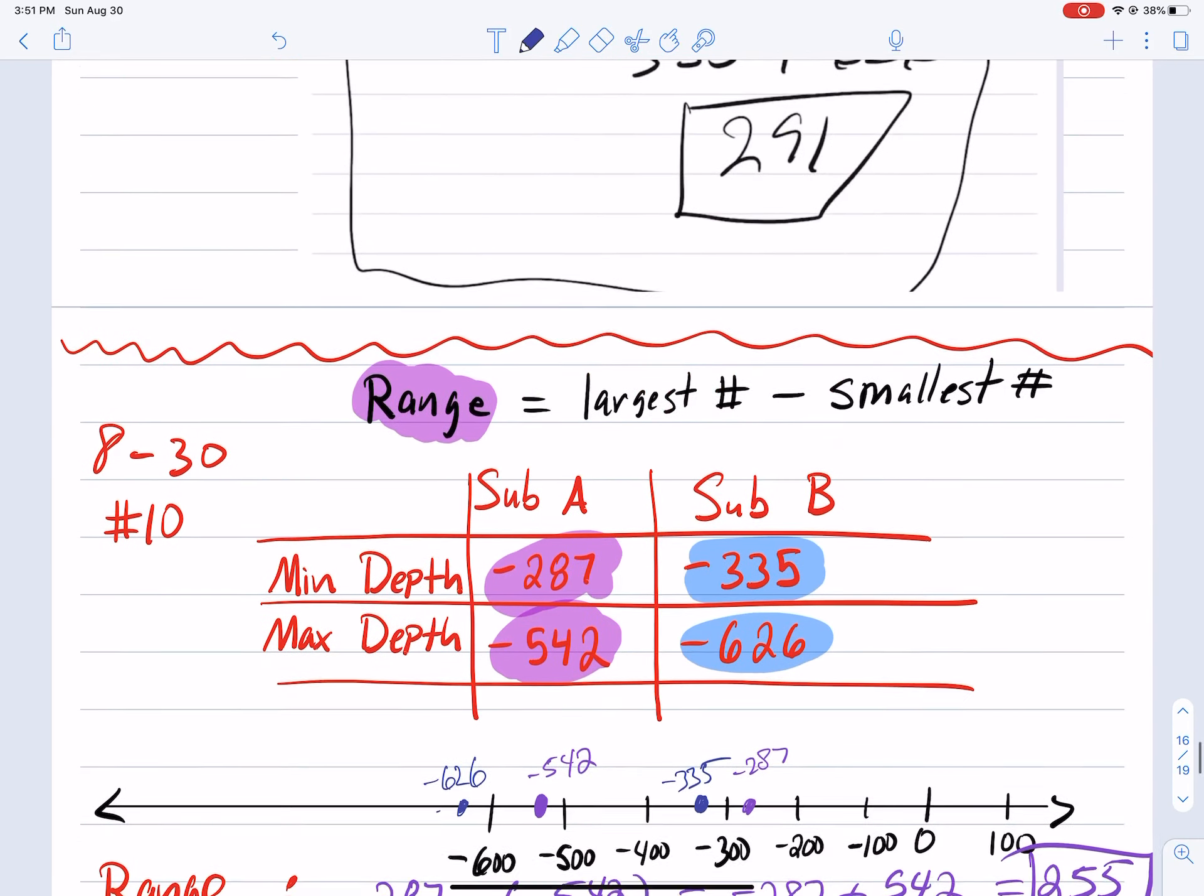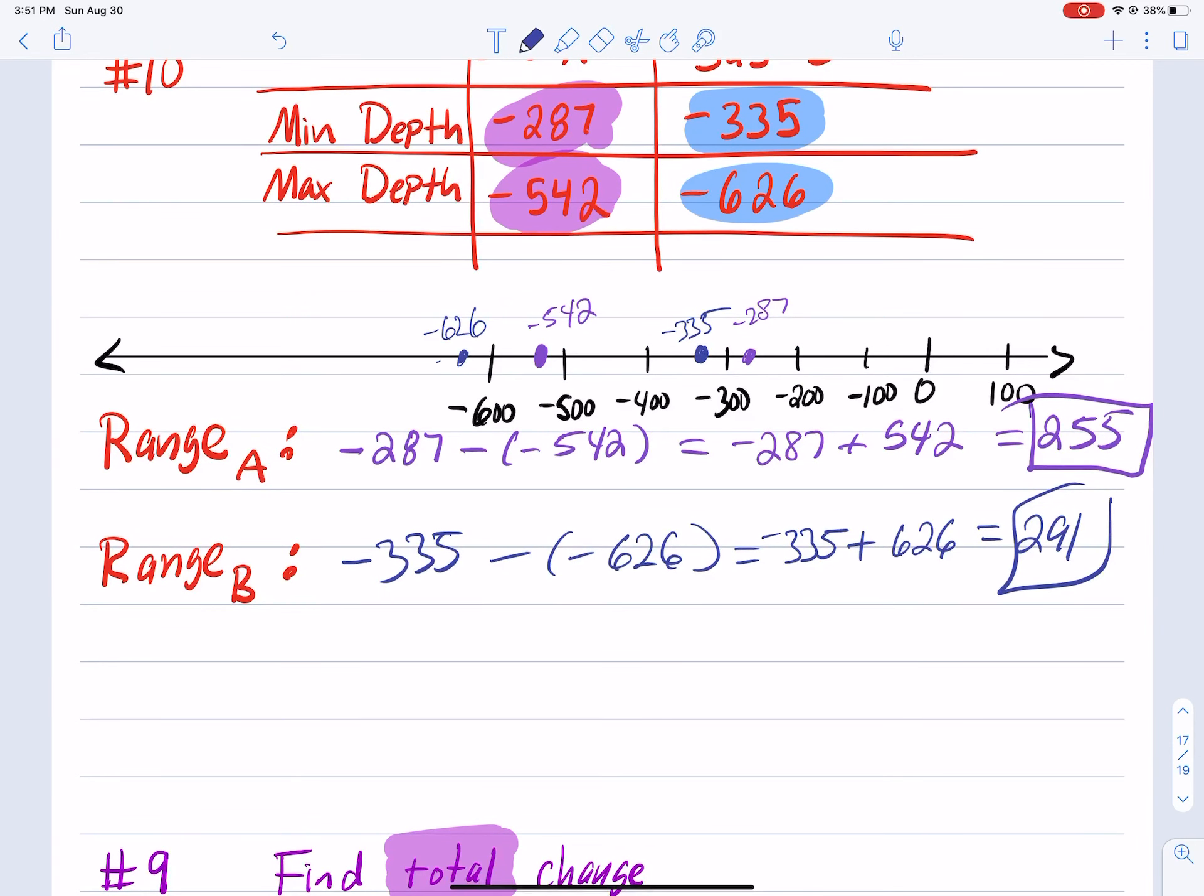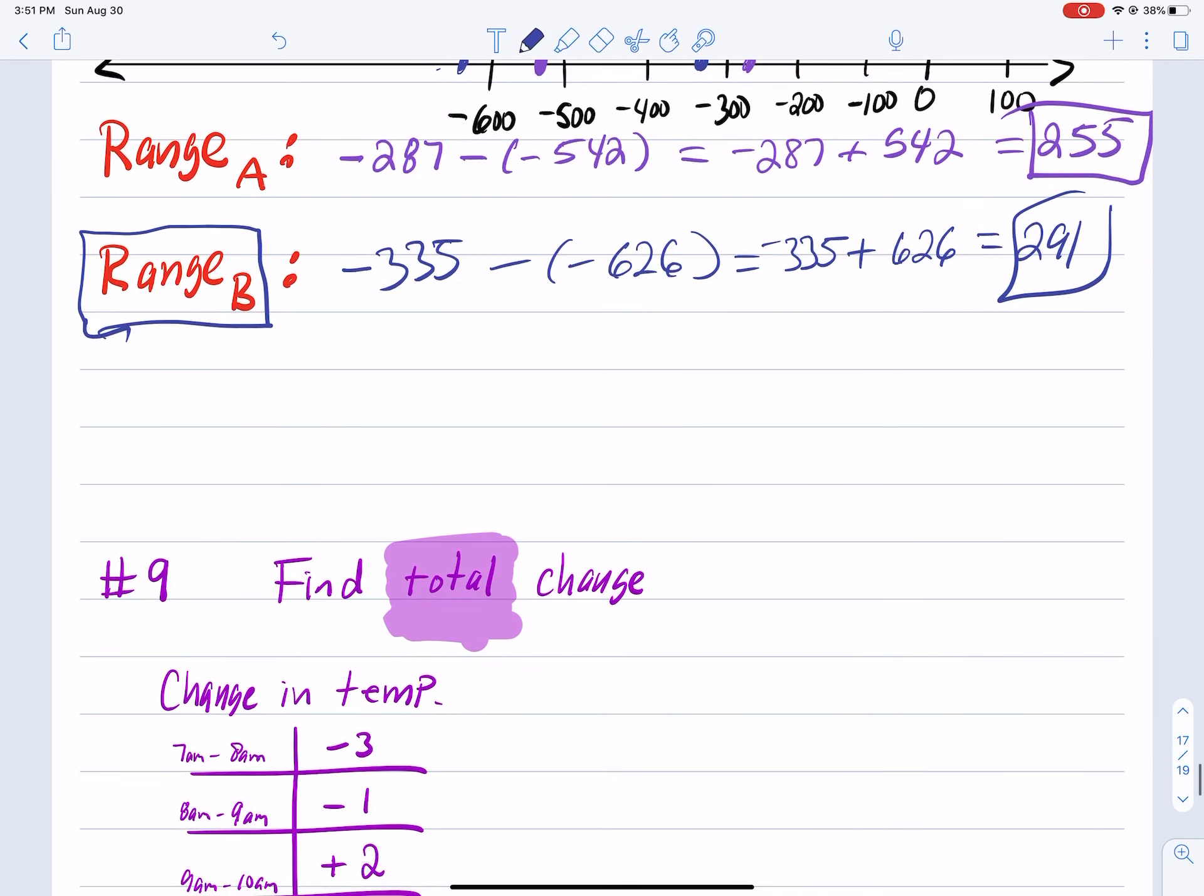So which has the largest range? Submarine B. When you answer this question, you are asked to find the range of submarine A, the range of submarine B, and so these are the values that you should plug in, 255 and 291. And so which sub has the largest range? This one here. And there's a drop down menu to pick submarine B.